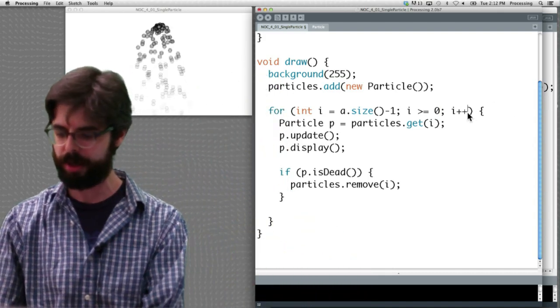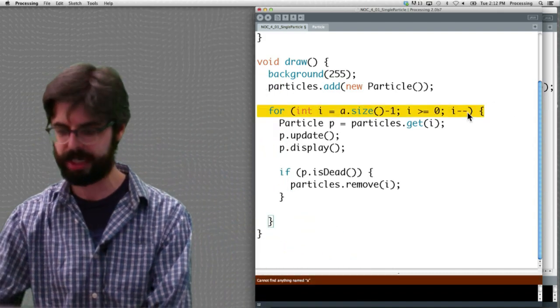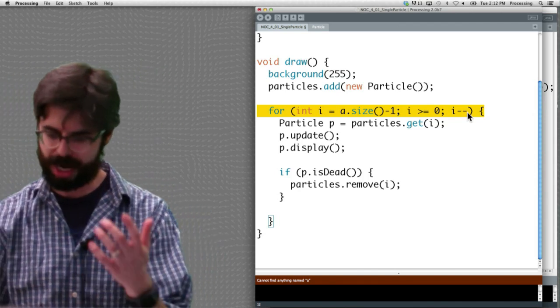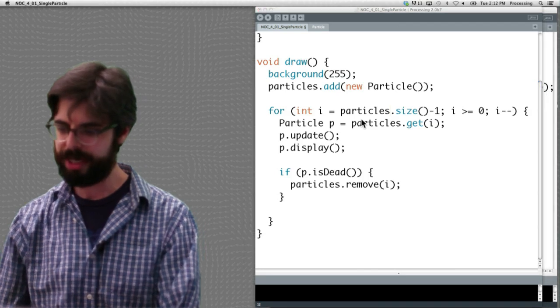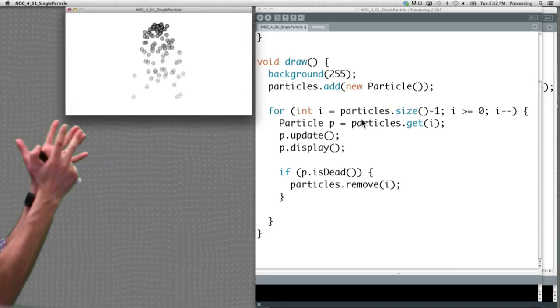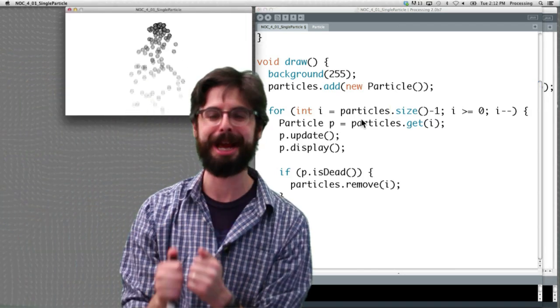So i is going to loop until it gets down to 0. Instead of going up by 1, we're going to say i minus minus. And it's not called A. Excuse me. In this example, the ArrayList is called particles. Now if we run this, we can see here we go. And now this is our example. We have done it. I didn't knock over the laptop. I'm dropping things.